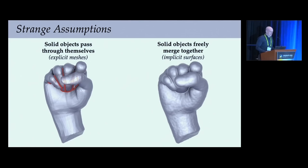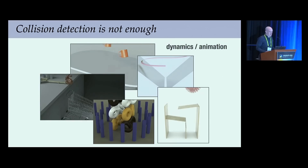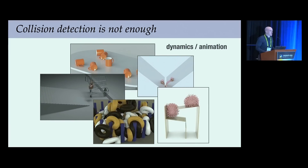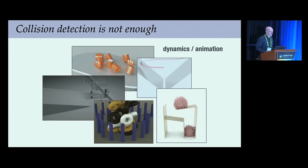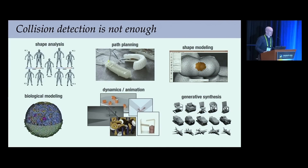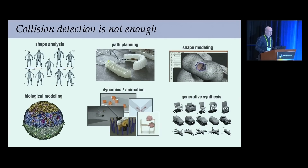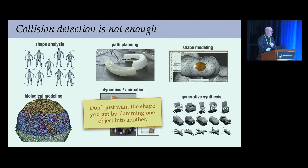The basic question of this talk is: how can we work directly in the space of intersection-free shapes? For animation, we can avoid intersections by simulating the dynamical response to collisions, but this doesn't help with broader tasks where we might need to analyze, process, or synthesize intersection-free geometry, and don't simply want the shape you get by slamming one object into another.